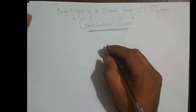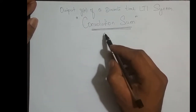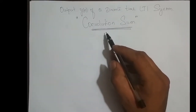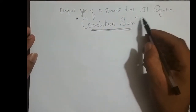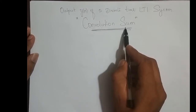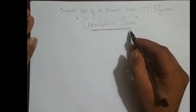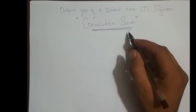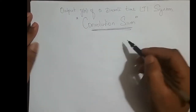Now it's time to derive the output of an LTI system. In this video we will derive the equation for the output of a discrete-time LTI system, also called the convolution sum. If the system is discrete time, we call it the convolution sum; if the system is continuous time, we call it the convolution integral. In this video we will derive the convolution sum equation, and in the next video we will derive the convolution integral equation.